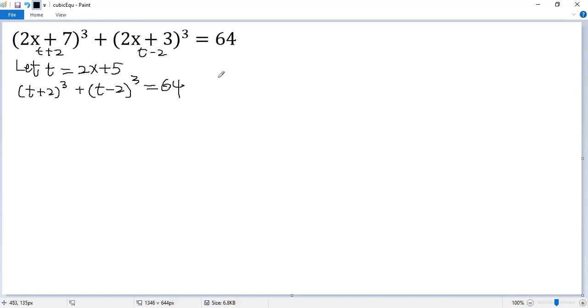To expand the left side, we use the cube formulas. So (a+b)³ equals a³ plus 3a²b plus 3ab² plus b³.